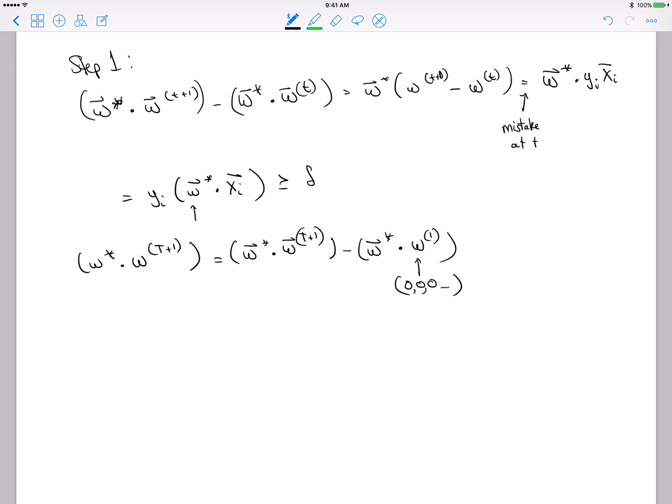I can rewrite this as a telescoping sum from tau equals 1 to t. This is W star dot W tau plus 1 minus W star dot W tau. Adding up deltas for each iteration gives t delta.